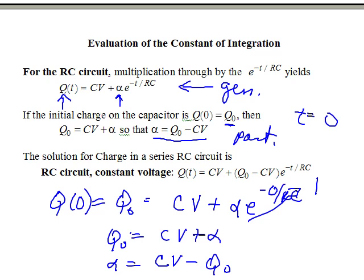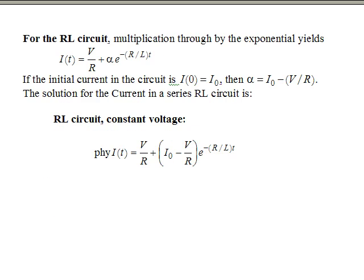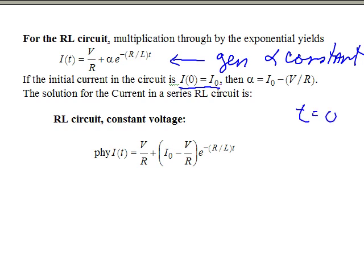The particular solution for charge in the RC circuit is: Q(T) equals CV plus (Q-naught minus CV) times E to the minus T over RC. Now we do exactly the same thing for the RL circuit. That was our general solution — it still has alpha, an undetermined constant. If we specify the initial current at T equals zero as I-naught, we can solve for alpha.